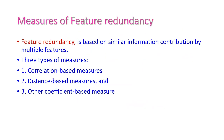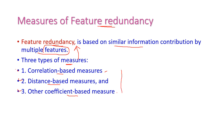Feature redundancy means similar information may be contributed by more than one feature. Multiple features having similar information need to be removed as redundant features. For identifying feature redundancy, there are three different types of measures: correlation-based measures, distance-based measures, and other coefficient-based measures.